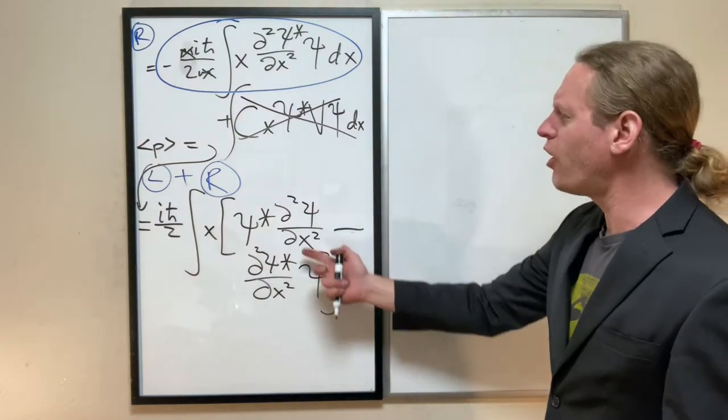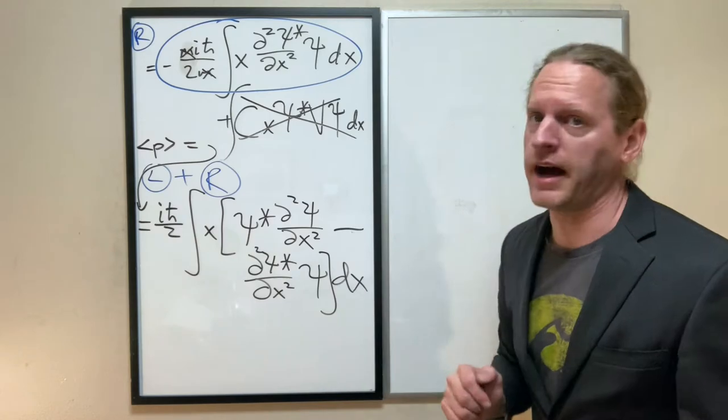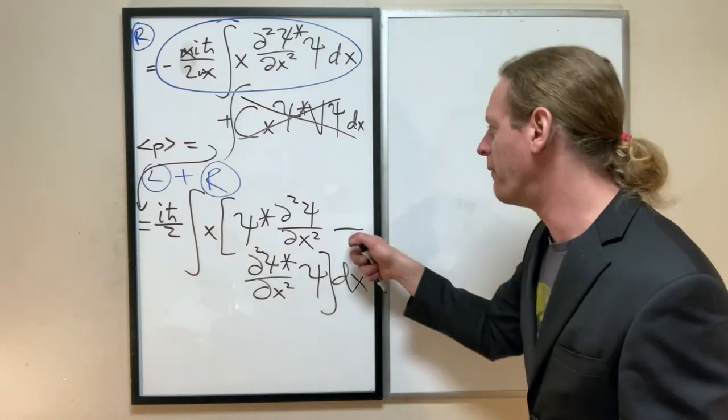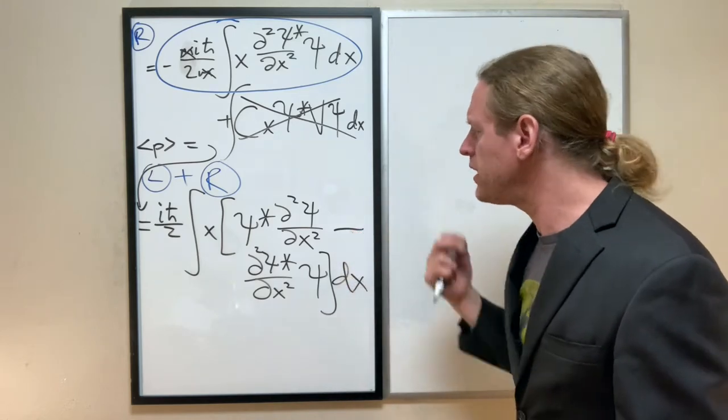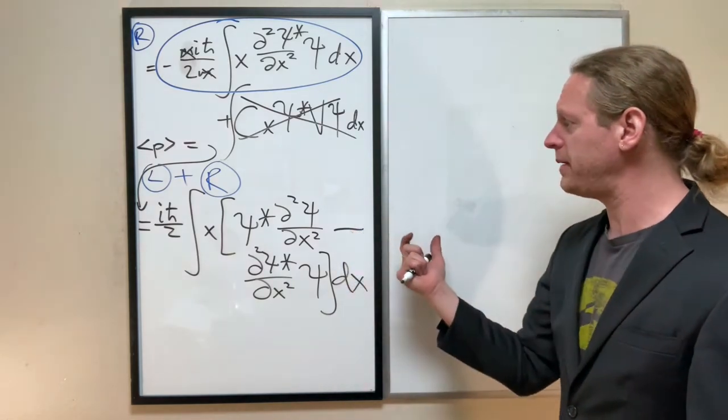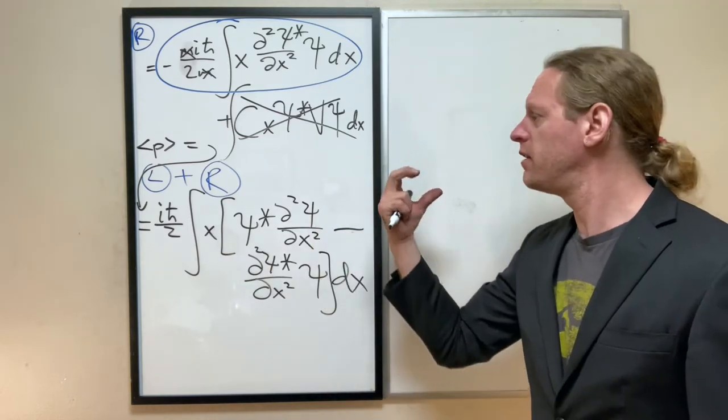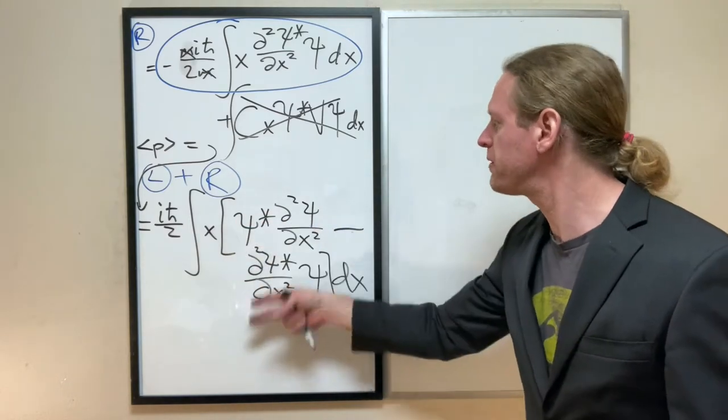Now, this almost looks like the chain rule, but it's not. First of all, the negative sign violates chain rule-ality. But the thing that we can guess, though, is what if maybe we just think of this as the derivative of something in terms of only first derivatives?